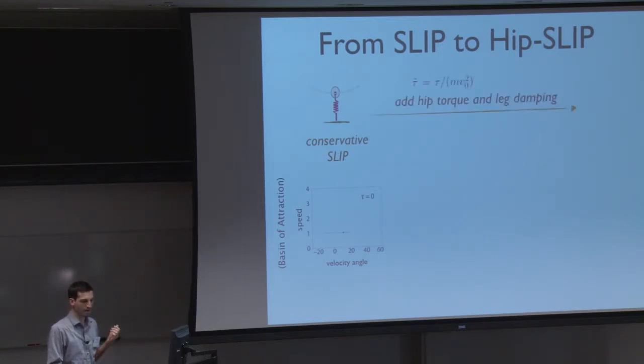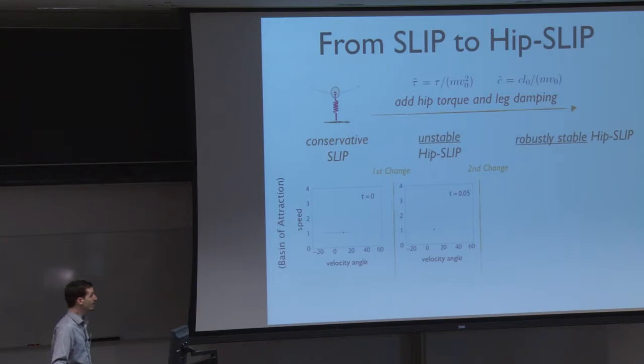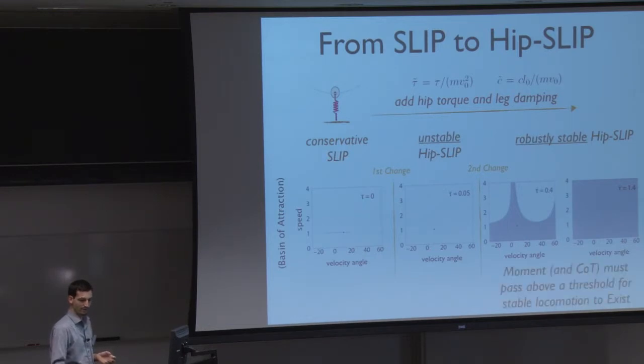But if we add hip torque and leg damping, and I'm just showing the non-dimensional values that are used here for the model, we notice that there's a big change right off the bat. And the first change is that it goes to an unstable solution. Many people that I've spoken to have guessed that it would actually become more stable, but it actually first becomes unstable. And then a second bifurcation or a second change occurs as you keep increasing this torque and damping. And then it becomes robustly stable. And so we see this large basin of attraction, and then that continues to grow. Now one of the points that I want to make here that's going to be relevant, and once I get to my last two slides real quick, is that the moments and by indications or implications of the cost of transport must pass above a threshold for stable locomotion to exist for this system, right? So it has to go above a non-zero threshold.